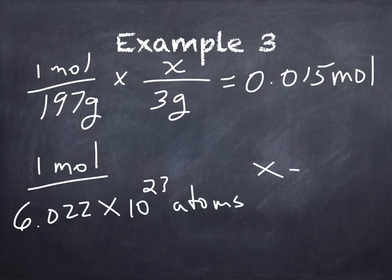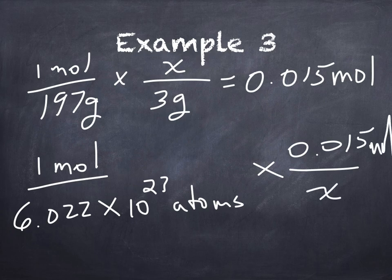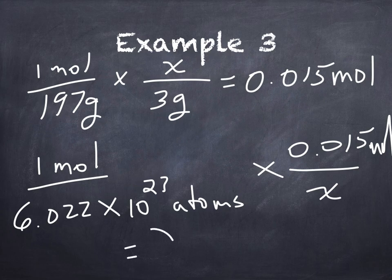Now we have 0.015 moles. Well, let's say one mole is to 6.022 times 10 to the 23rd atoms as 0.015 moles is to x. And we'll take a moment to verify that moles are on the same row. And now again, just cross multiply and divide. 0.015 times 6.022 times 10 to the 23rd atoms.